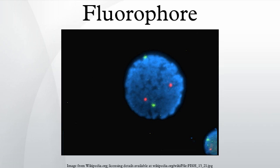Benzene, one of the simplest aromatic hydrocarbons, for example, is excited at 254 nm and emits at 300 nm. This discriminates fluorophores from quantum dots, which are fluorescent semiconductor nanoparticles.